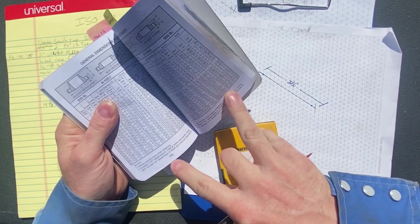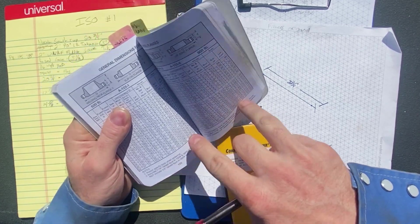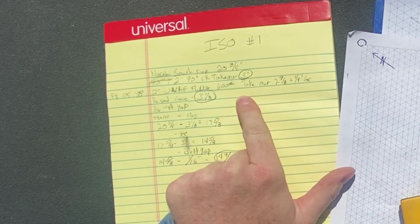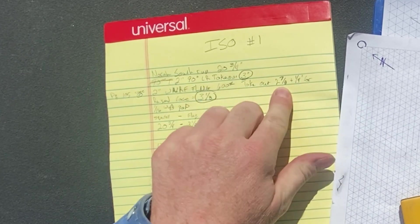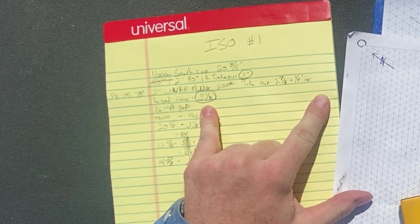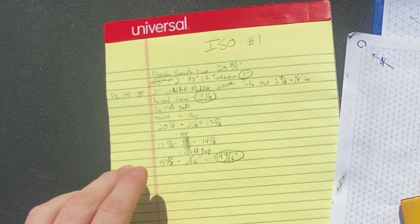It does not include the quarter inch raised face for 400 and heavier. So we have to add that quarter inch to the two and seven eighths. So your flange takeout is going to be two and seven eighths plus a quarter inch, and that equals three and an eighth. So that'll be what you subtract from that overall length when we get there.